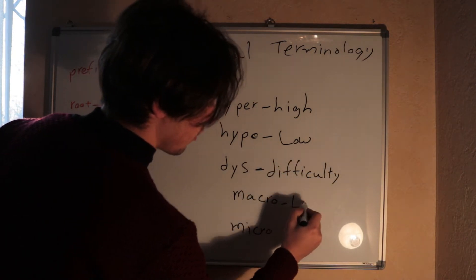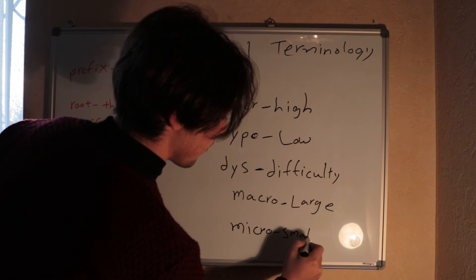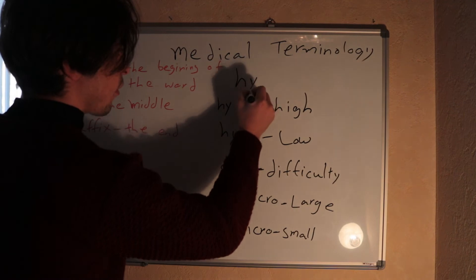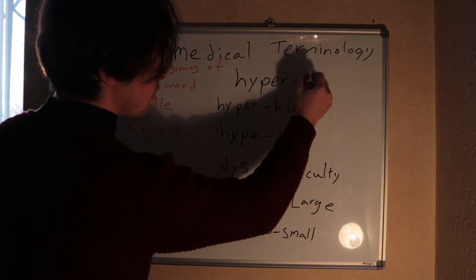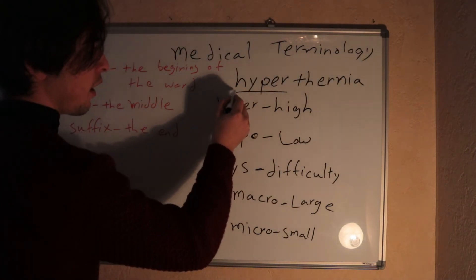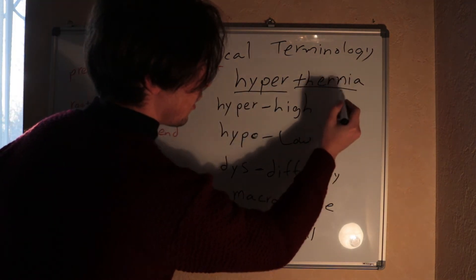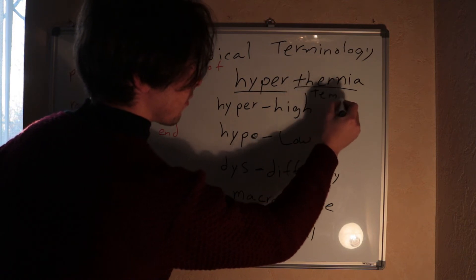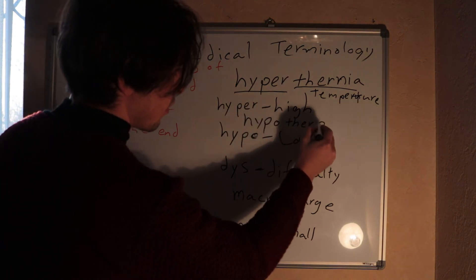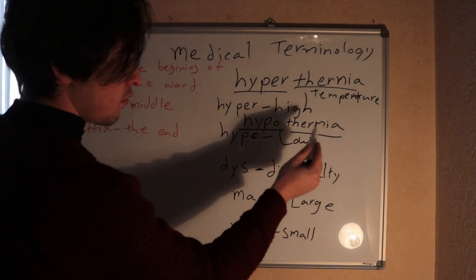For example, hyperthermia: 'hyper-' is the prefix meaning high, and 'thermia' means temperature. We can also make the opposite — hypothermia — where 'hypo-' is the prefix meaning low, so hypothermia means low temperature.